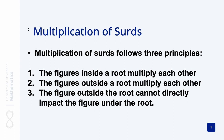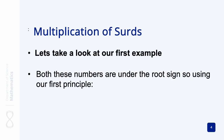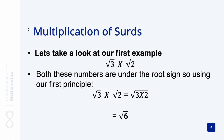Let's take a look at our first example. We have the root of three multiplied by the root of two. As you can see, both numbers are inside the root, so according to the first principle, these numbers multiply each other. In this case we have three times two, which gives us root of six as our final answer.